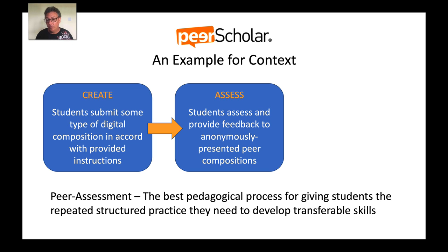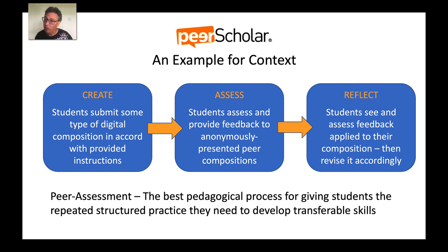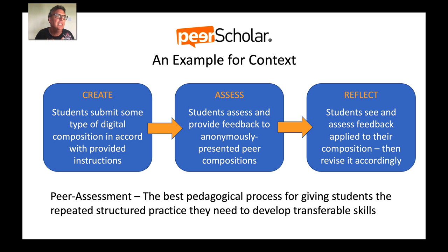While they do this to six peers, six peers do it to their work. In a third phase, students see the feedback given to their own work and analyze it one at a time: do they agree with it, and would their work be better if they followed it? This engages receptive communication, metacognition, and critical and creative thinking — all done in a structured, repeated way.